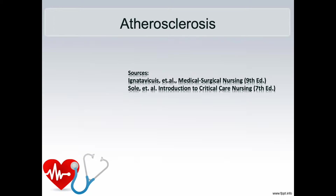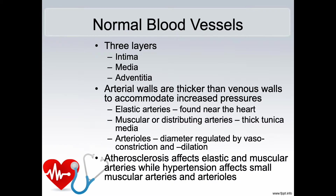In order to understand atherosclerosis and its impact on the body, it is important that we understand how normal blood vessels should function and how they should look. There are normally three layers: the intima, the media, and the adventitia. Arterial walls are thicker than venous walls to accommodate increased pressures. There are elastic arteries found near the heart, muscular or distributing arteries with a thick tunica media, and arterioles. Diameter is regulated by vasoconstriction and vasodilation.